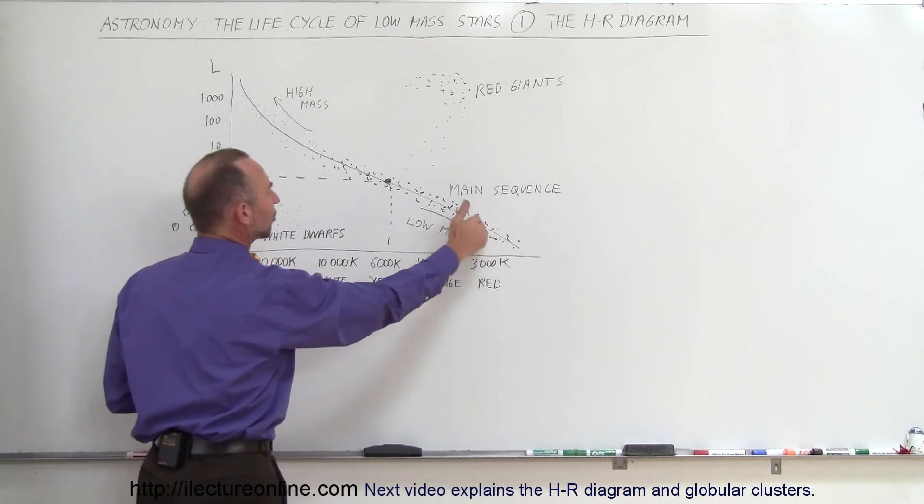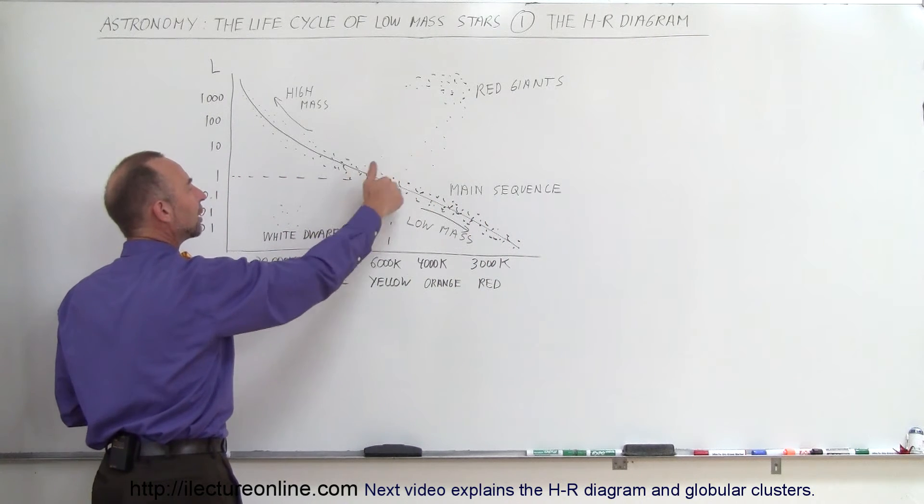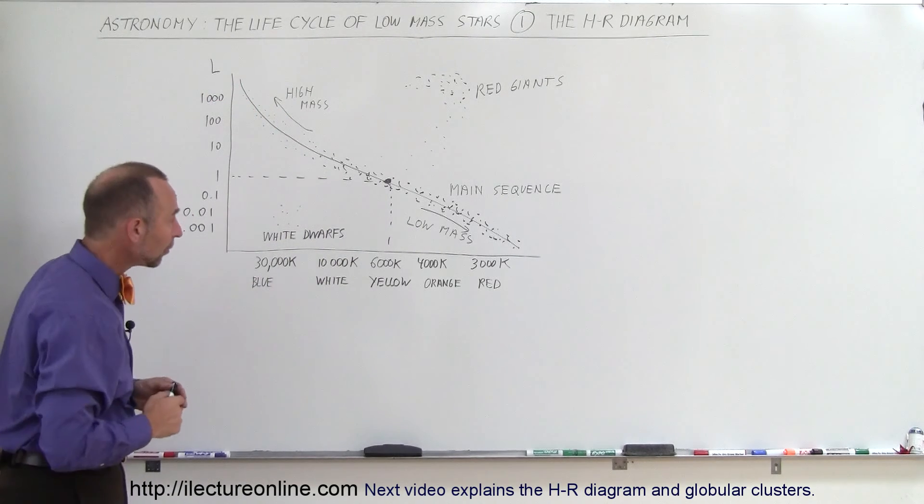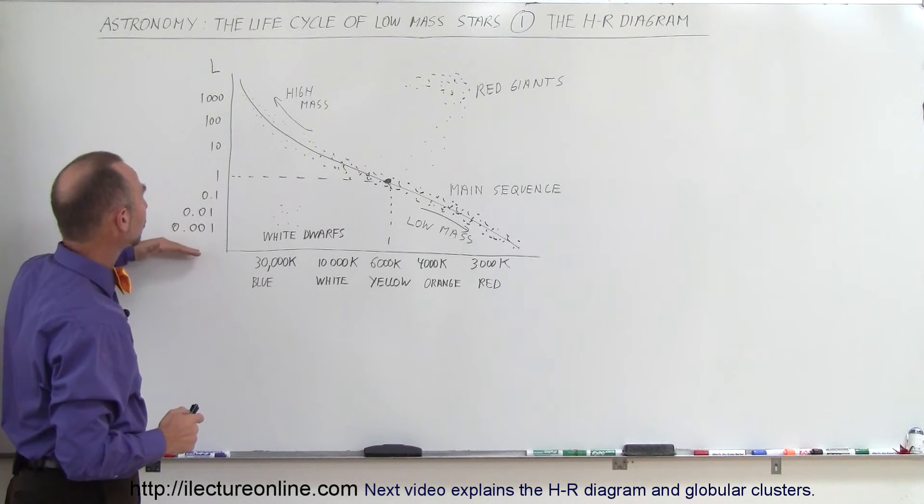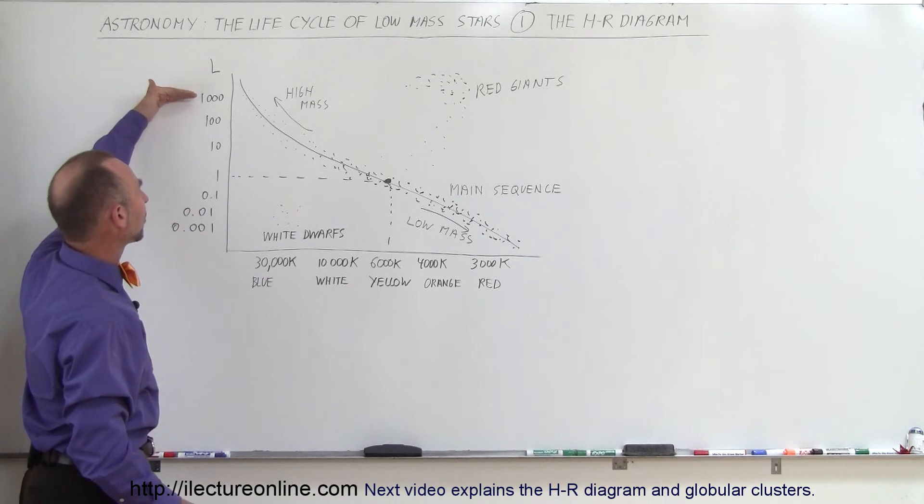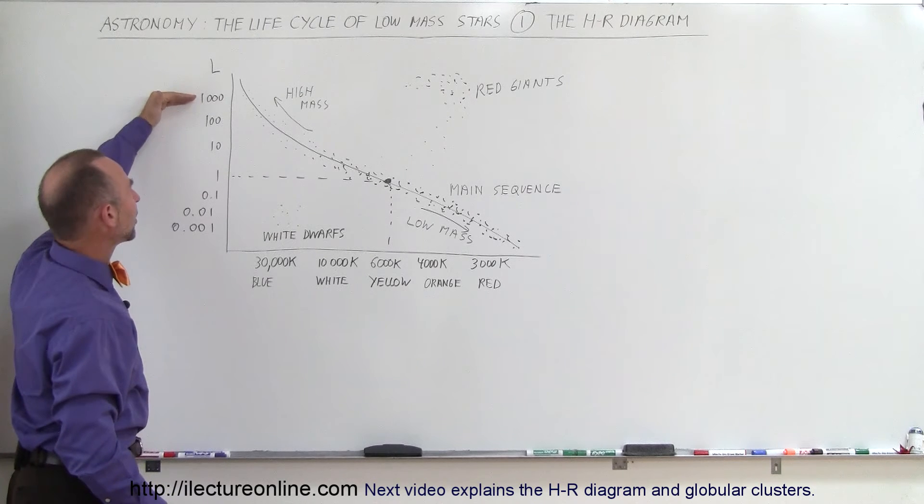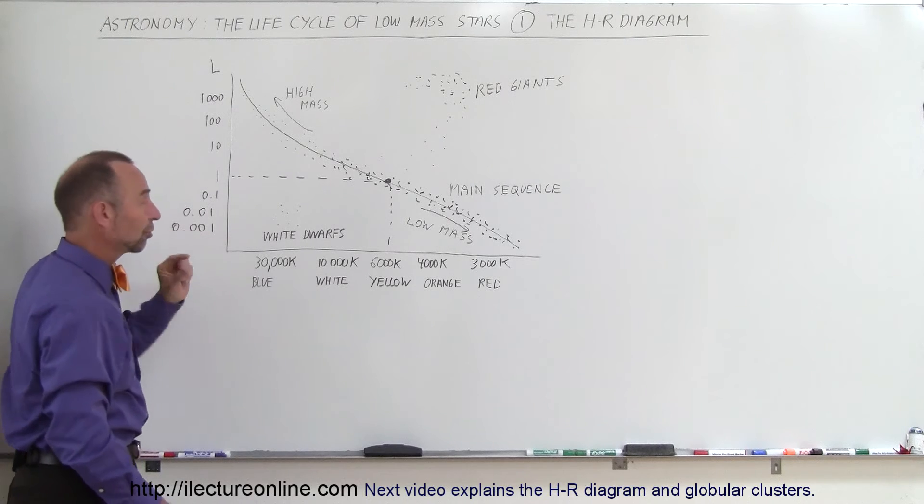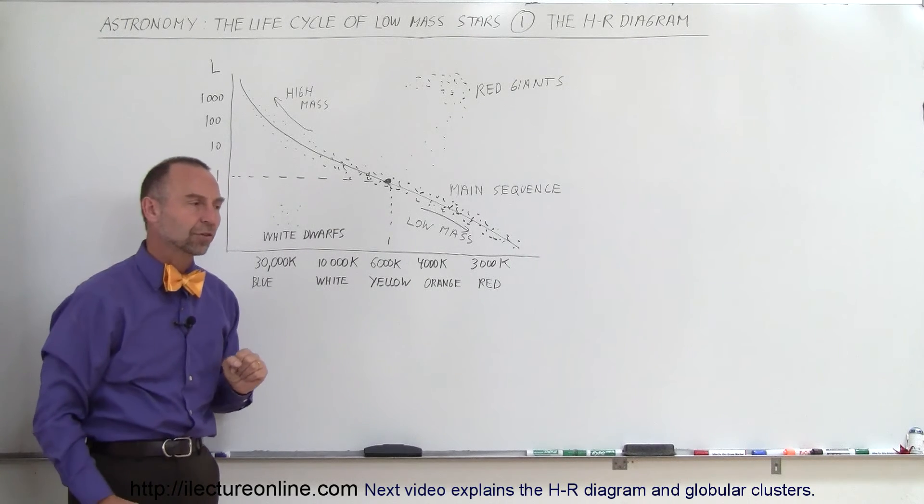So these were small red stars. Here would be yellow stars like the sun, and over here would be the very large white and blue stars. Also, the luminosity of stars would depend upon their mass. Very large stars had very large luminosities compared to the sun being one, maybe a thousand or ten thousand times the luminosity of the sun, and very small stars had just a small fraction of the luminosity of the sun.